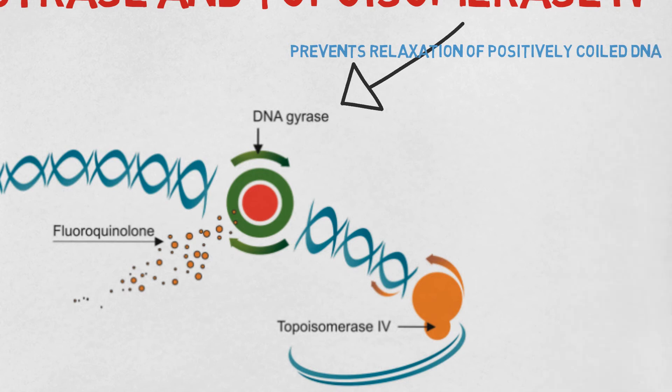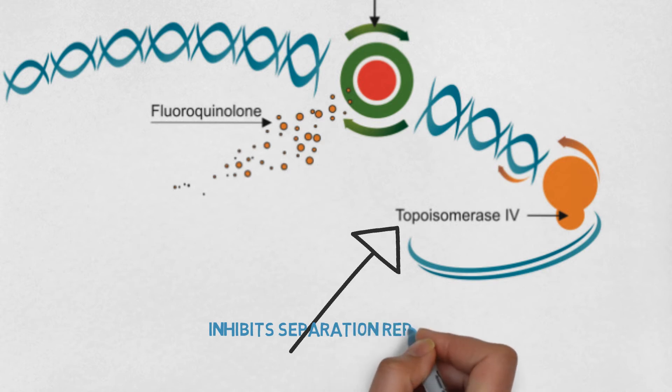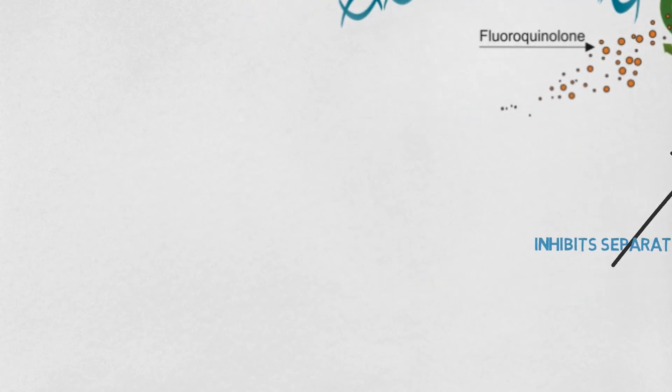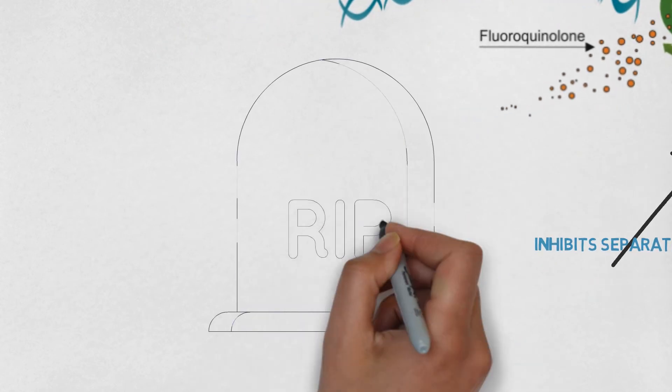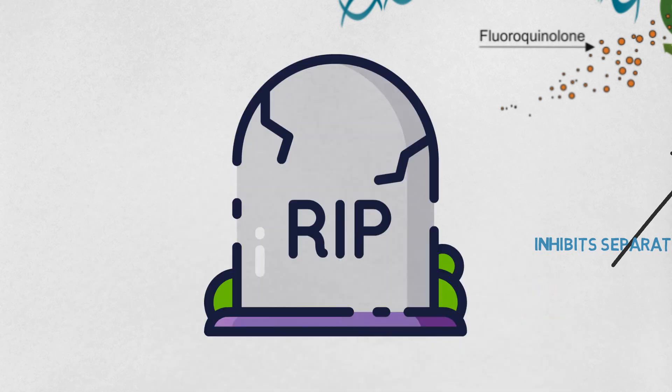However, the inhibition of topoisomerase 4 interferes with the separation of replicated chromosomal DNA into their respective daughter cells during cell division. Hence, hindering the bacterial cell replication process while leaving the DNA strand cleaved, which leads to the death of the bacterial cell.